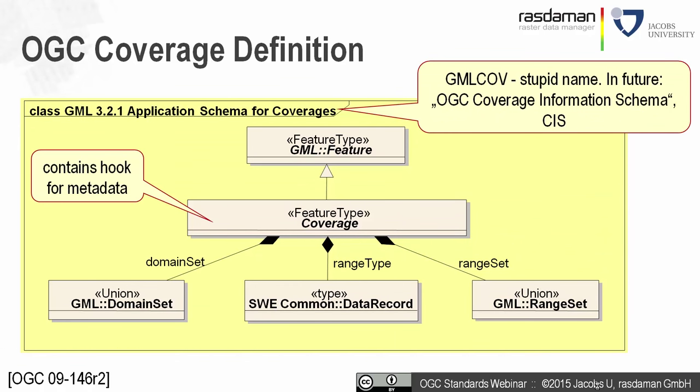A coverage is derived from a feature and has three main components. The domain set tells us where we can find values. The range set contains those values — the pixel payload. The range type defines the data structure of those range values so that we know what they actually mean. Additionally, a coverage has a hook for metadata. We'll come back on that later.